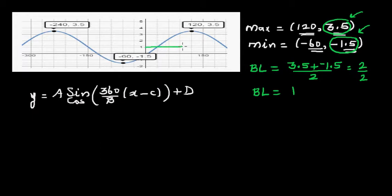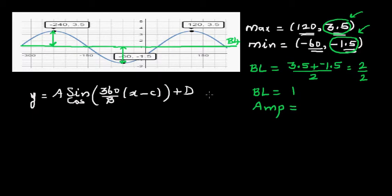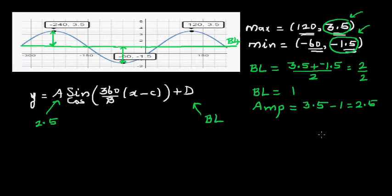If you draw the baseline at y = 1, it makes sense — the distance from the baseline to the maximum and from the baseline to the minimum are both equal to the amplitude. The amplitude is 3.5 minus 1, which equals 2.5, so a = 2.5.